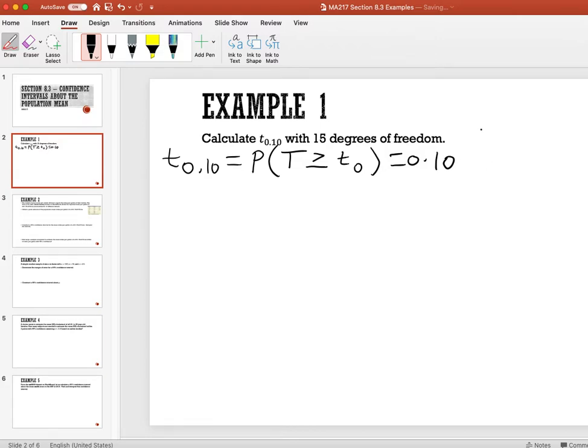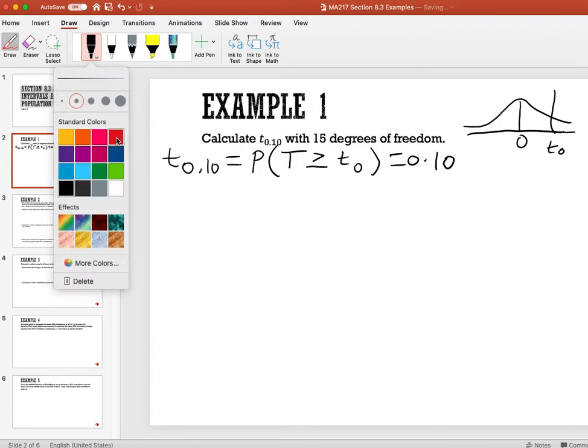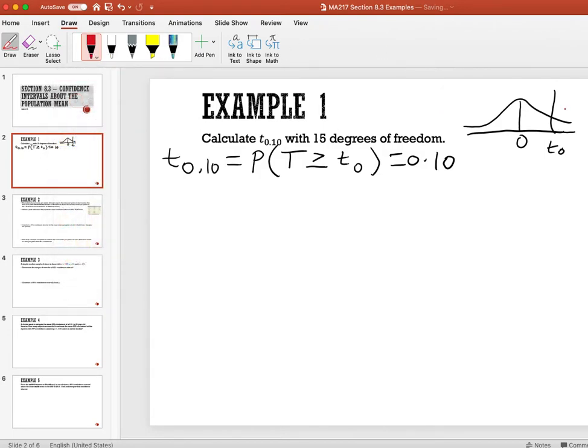The picture that corresponds with this looks like this. The t distribution has a mean of 0, and we want the distribution to the right to have the area of - so this area here in red - to have a value of 0.10.